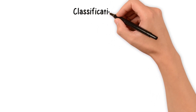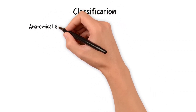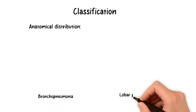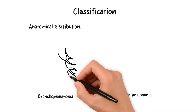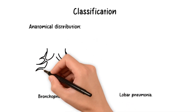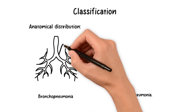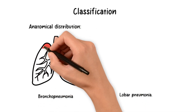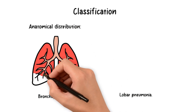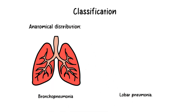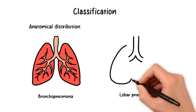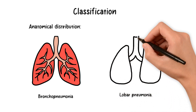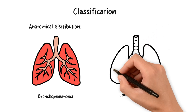Pneumonia can be classified based on anatomical distribution and the setting in which it is acquired. Based on anatomical distribution, we have two main types: bronchopneumonia and lobar pneumonia. Bronchopneumonia involves patchy, multifocal, and scattered inflammation affecting both lungs. It begins in the bronchi and bronchioles and then spreads to the alveoli, resulting in a diffuse pattern of infection. In contrast, lobar pneumonia is characterized by consolidation of an entire lobe or a significant portion of one or both lungs, and typically presents as a more localized infection.